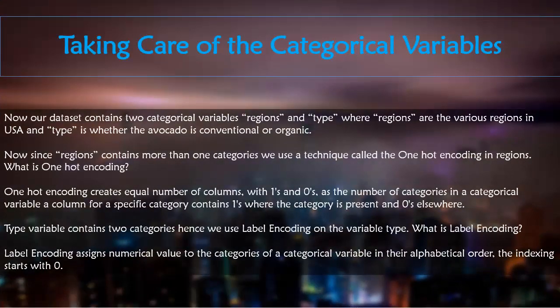Now we have come to the final step of our data preprocessing and that is taking care of the categorical variables. Now our dataset contains two categorical variables regions and type where regions are the various regions in USA and type is whether the avocado is conventional or organic. Now since regions contains more than one categories, we use a technique called the one-hot encoding in regions. Now what is one-hot encoding? One-hot encoding creates equal number of columns with ones and zeros as the number of categories in a categorical variable. A column for a specific category contains ones where the category is present and zeros elsewhere.